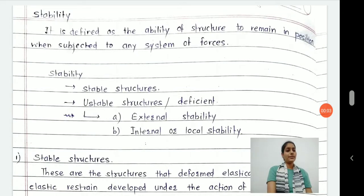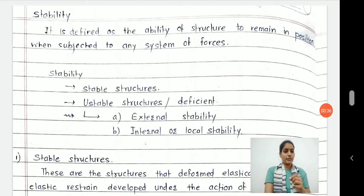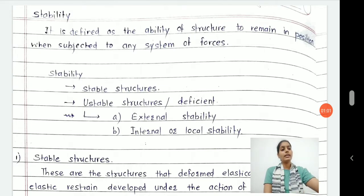Hello students, I hope you all are doing well. In today's session we will see what is stability. When analyzing any structure that we're going to design, we have to ensure the stability of that particular structure. First we need to understand what the word 'stability' stands for — it stands for the structure which can carry its own self-weight and stand straight without deforming. Later we will see what is determinacy and indeterminacy. The definition of stability is: it is defined as the ability of a structure to remain in position when subjected to any system of forces.